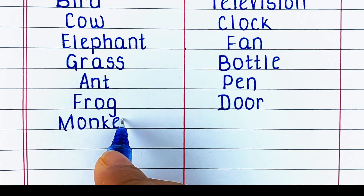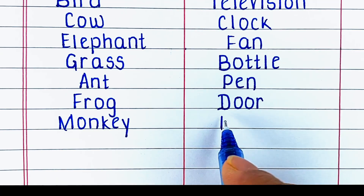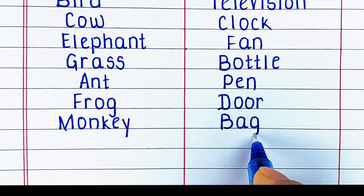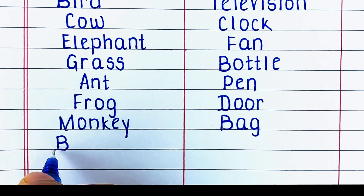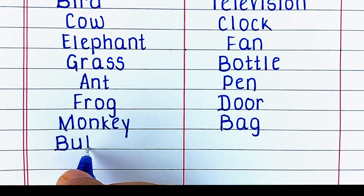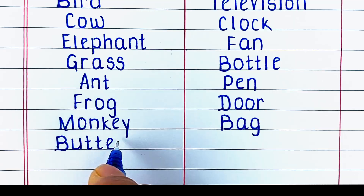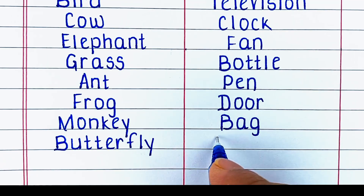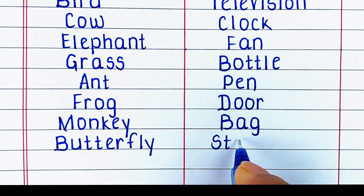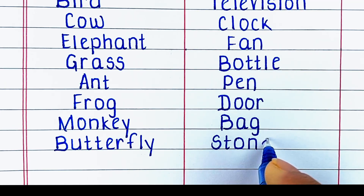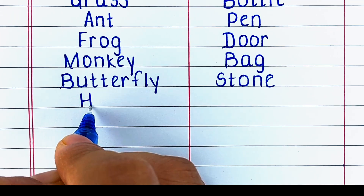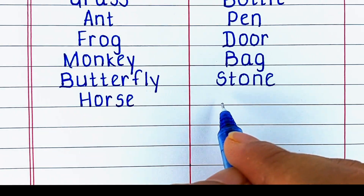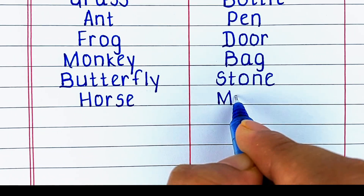Next living thing is monkey. Next non-living thing is bag. Next living thing is butterfly. Next non-living thing is stone. If you have learned something till now, let us know 5 living things and 5 non-living things each in the comment section below.